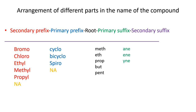The next part is called primary suffix. Primary suffix depends on the saturation of the compound. If it is fully saturated then it is called '-ane'. If there is a double bond then it is represented with '-ene', and a triple bond is represented with '-yne'. At the last there is a secondary suffix in an organic name. This part is used to represent the most senior functional group present. For example, for COOH you will use '-oic acid', and similarly other suffixes include amide, al, one, ol, etc.